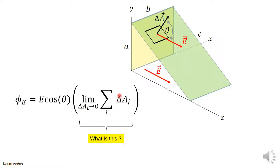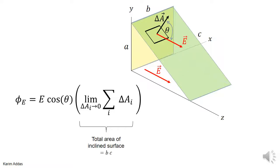Adding all those area elements gives us the total area of the inclined surface. Since the inclined surface has sides B and C, the total area is just B times C.